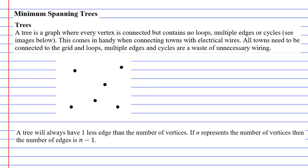We're now going to talk about what are known as trees. A tree is a graph where every vertex is connected but contains no loops, multiple edges, or cycles. We'll look at the diagram below where we have some vertices and we're going to try and connect them.